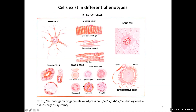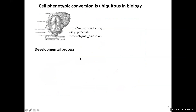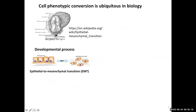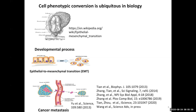Cells may share the same set of genome but can exist in different phenotypes — morphologically, physiologically, and functionally very different. Cells can exist in different states and there can be conversion between different phenotypes, like during developmental processes. Cells need to convert between tightly bound epithelial cells to loosely bound, more mobile mesenchymal phenotypes. This process is called epithelial-to-mesenchymal transition, EMT, and the reverse is MET. This process is also involved in wound healing, cancer metastasis, and fibrosis.